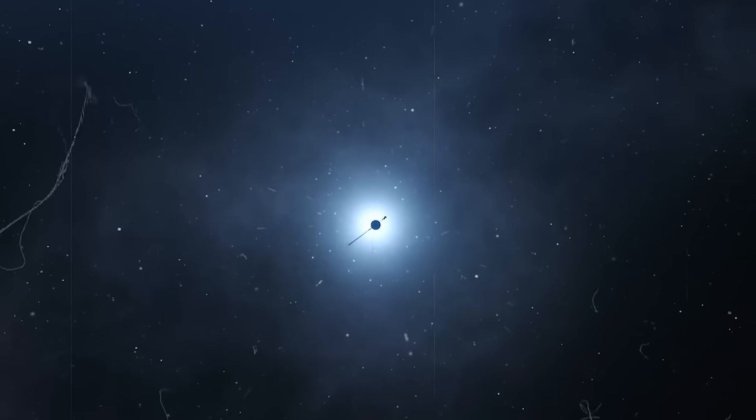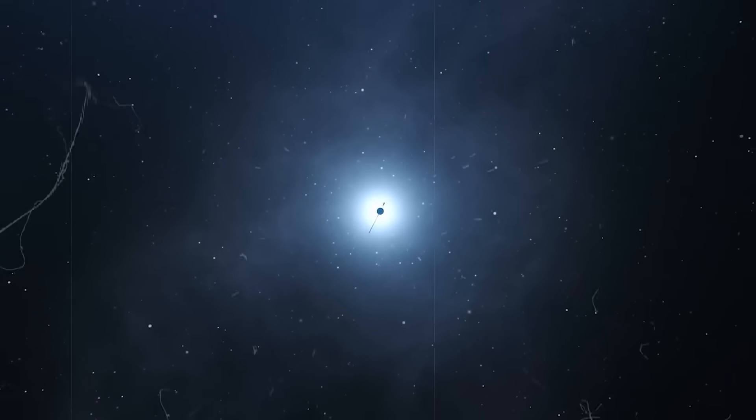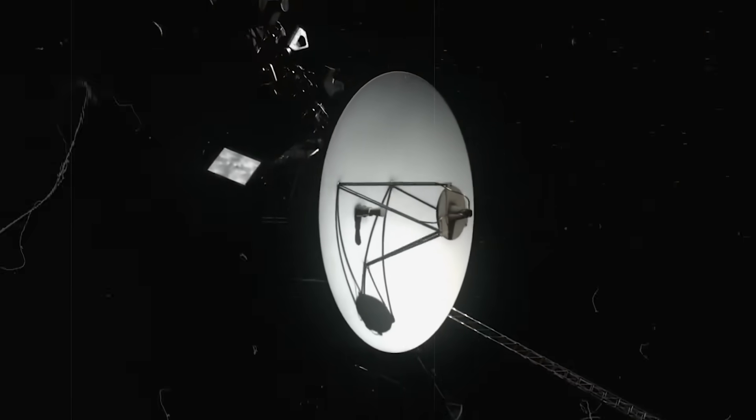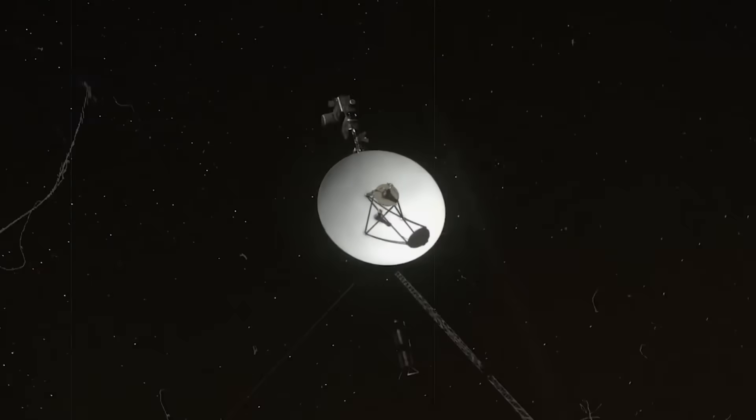The Voyager 1 and Voyager 2 robotic probes were sent into space in 1977 as part of the Voyager program, a scientific endeavor designed to uncover new and exciting information about the cosmos. Voyager 1 has been making its way across space for decades, all the while providing us with invaluable new data.